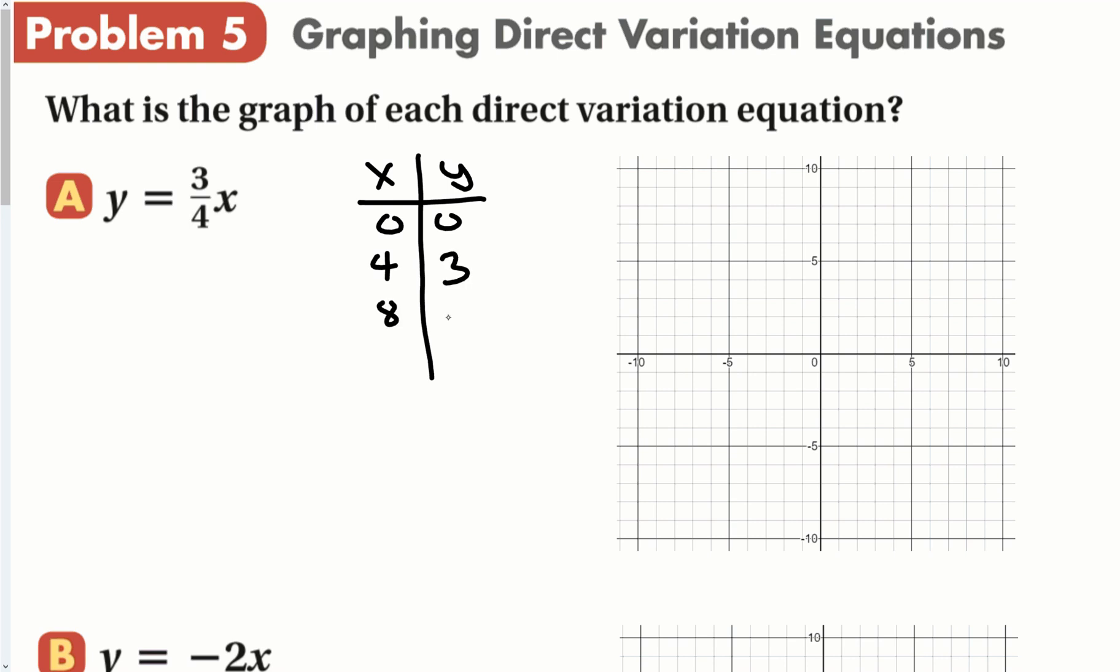Four times three divided by four is going to be three. I'm going to plug in eight and get six. Plug in 12 and get nine. So now when I make this graph, four, three, eight, six, and 12, nine - that's enough to draw this line. As x goes up, y goes up, always by the same amount, and that's a direct variation graph. It goes through the origin and is a straight line.